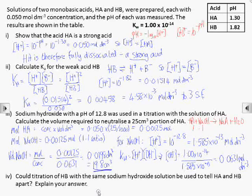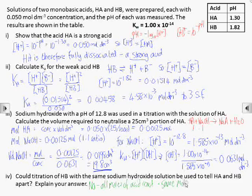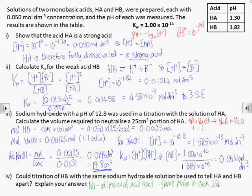We need to be aware that the equivalence point of a titration is when all the acid molecules have been neutralized. It doesn't matter whether they're weak or strong acid molecules, the same number of moles of acid molecules will require the same number of moles of hydroxide ions to neutralize them.